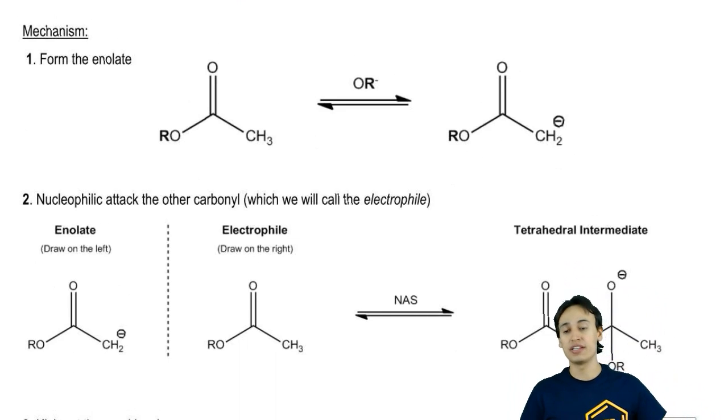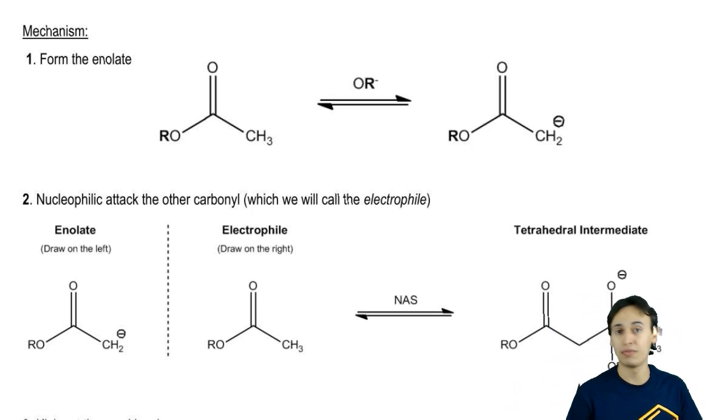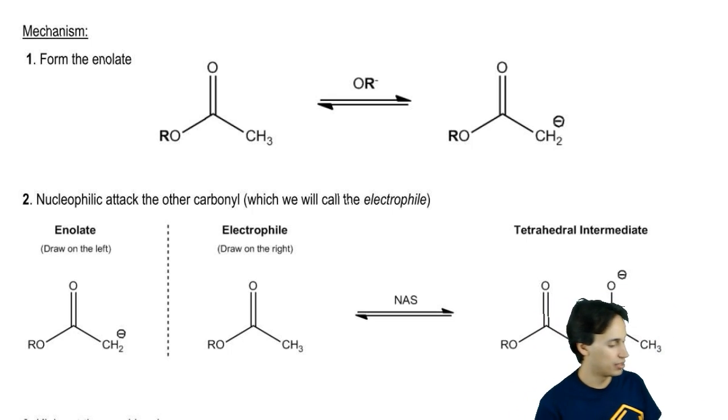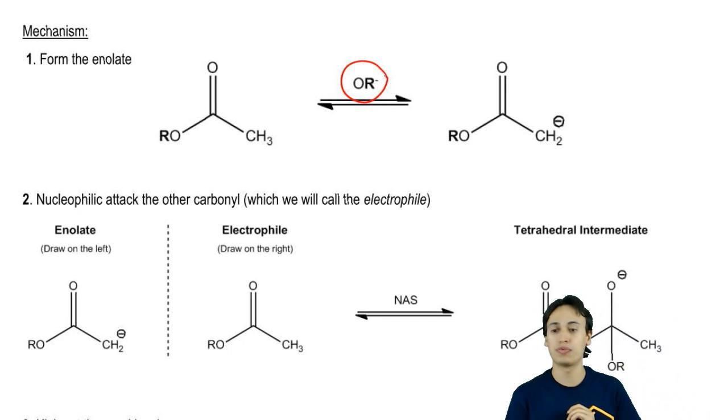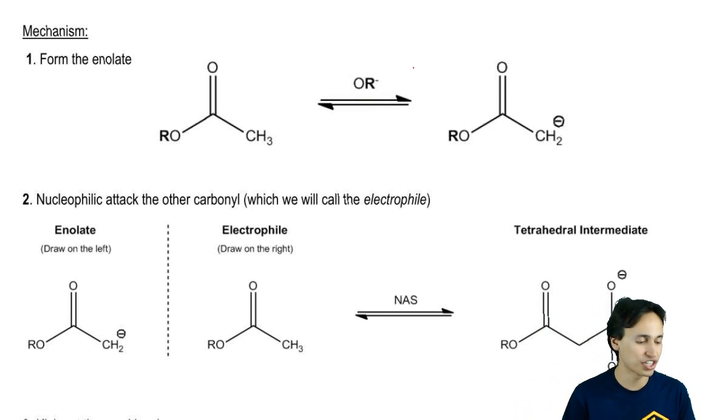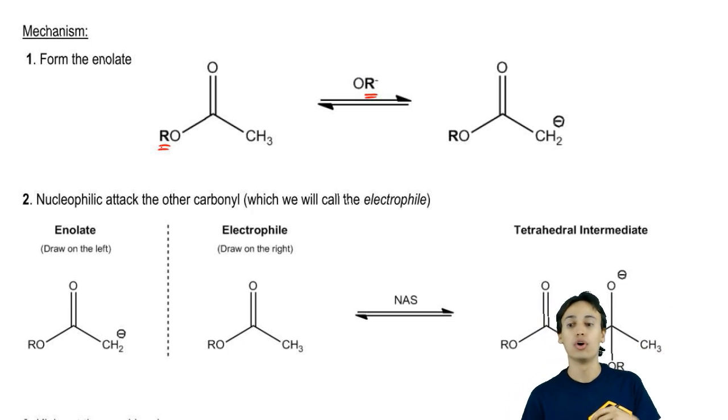The first step is to deprotonate your ester to make the enolate. Again, I've said this throughout all my videos. Whenever you're reacting an ester with an oxide base, what do I have to be careful about? I have to make sure that my R group is the same as my alkyl R group in the ester or I get a transesterification.